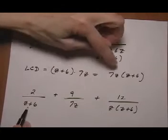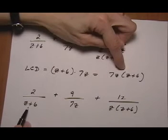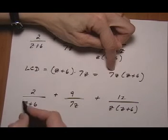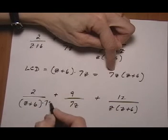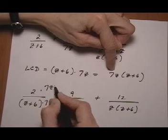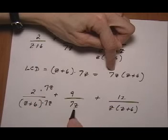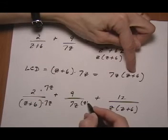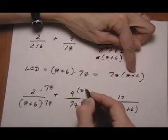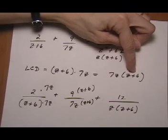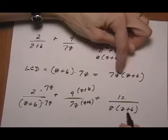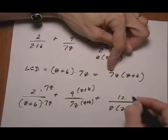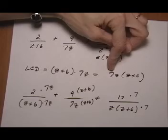So the first one, Z plus 6, compare it to the LCD. The 7Z is missing, so that means we're going to multiply by 7Z, top and bottom. For 7Z, the Z plus 6 is missing, so multiply by Z plus 6, top and bottom. For Z times Z plus 6, the 7 is missing, so multiply by 7, top and bottom.